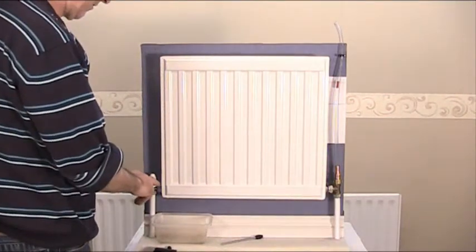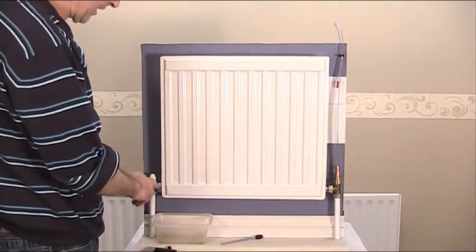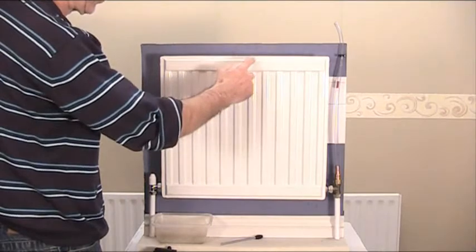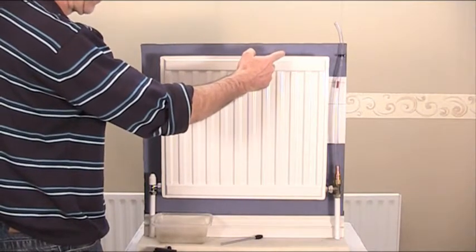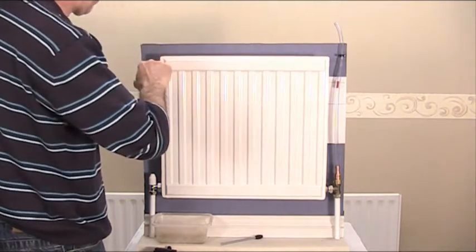Now if we undo the union valve here, water will start to trickle out. Now it's open to the atmosphere on both sides, the air vent key is not in,